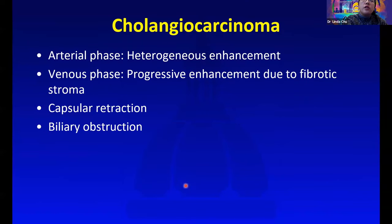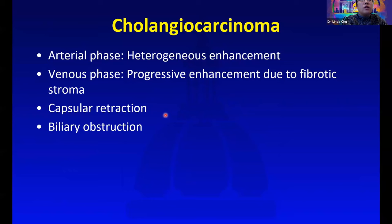On arterial phase, we see heterogeneous enhancement. On venous phase, we expect progressive enhancement due to the fibrotic stroma. Secondary signs include capsular retraction and biliary obstruction.